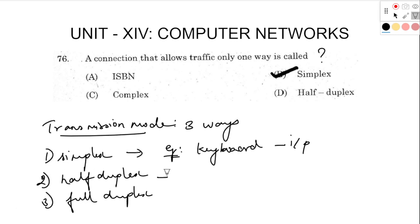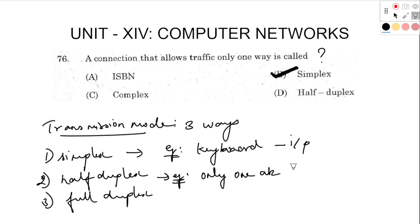Half duplex: we can receive both two ways, but only one at a time. Only one at a time — remember this keyword. The example is walkie-talkie.